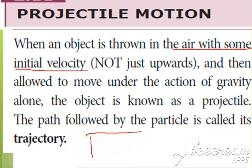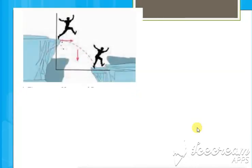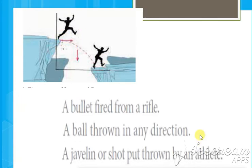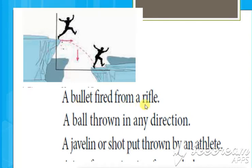So the projectile is the topic we are going to study. Here is another example: a man jumps from one position making some angle and moves over to the other direction — that also forms a projectile. Examples include a bullet fired from a rifle, a ball thrown in any direction, a javelin, or a shot put thrown by an athlete.